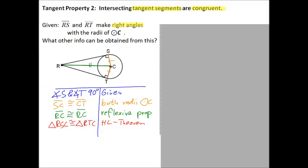And now that we have two triangles that are congruent, we can say things about their remaining parts, and we can say that the side RS has to be congruent to the side RT. Because of CPCTC, corresponding parts of congruent triangles are congruent.